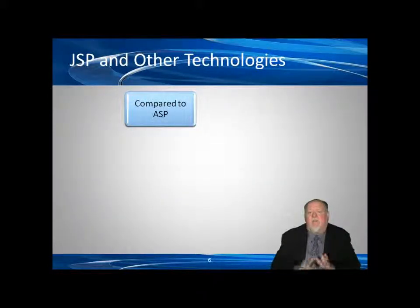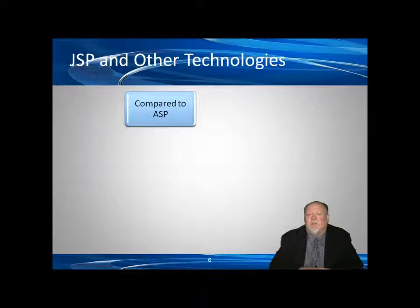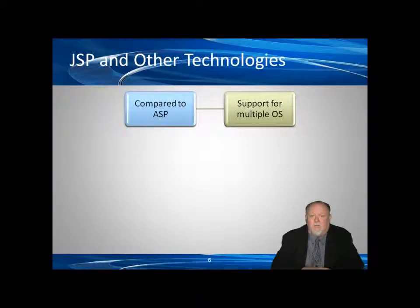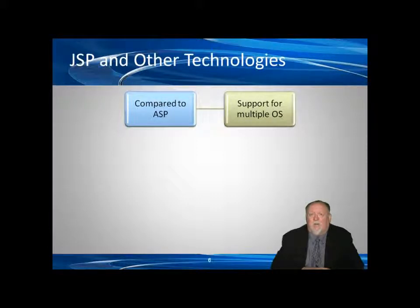Now, how does JSP compare to other technologies? The first one is ASP — it doesn't matter whether we're talking traditional ASP or ASP.net, this is the idea of an active server page in the Windows environment. JSPs are not limited just to the Windows platform; they can run virtually on any platform that has Java — the flavors of Unix, ZOS on the IBM mainframe, Linux, just about any OS at all. Basically, anything that can run Java can run a JSP, provided we have the appropriate servlet container.